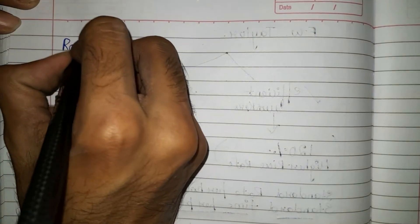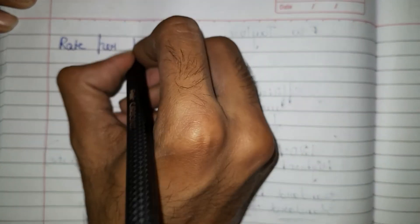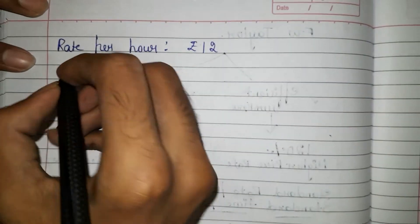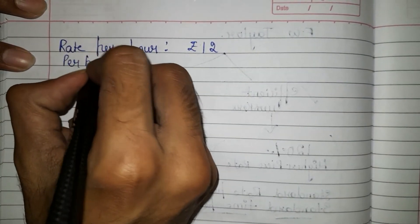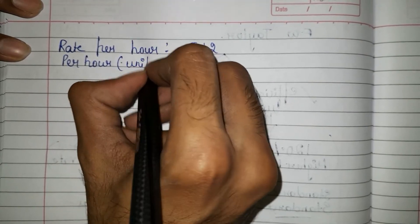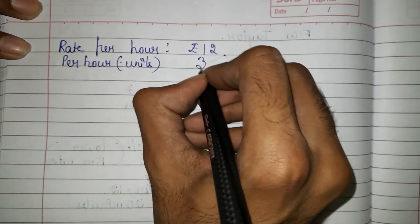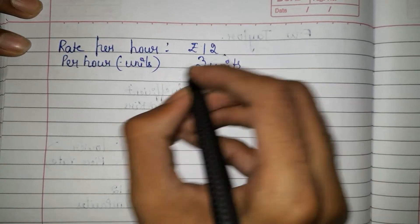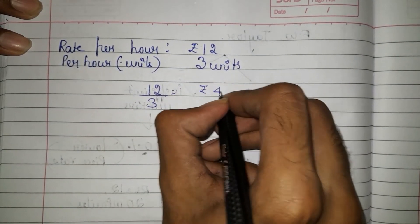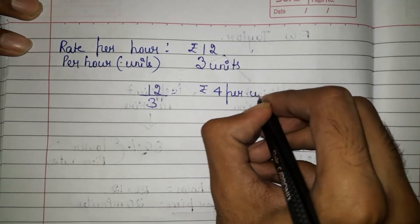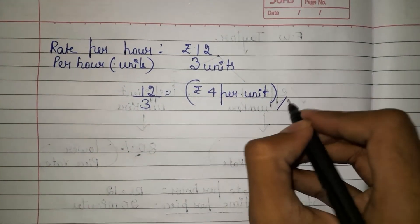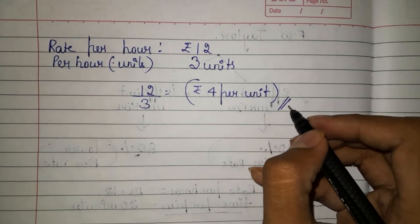Now, the rate per hour is Rs. 12 and per hour the standard production is 3 units, so we divide 12 by 3 to get Rs. 4. So for each unit that a worker manufactures, they are paid Rs. 4 — that is the piece rate.